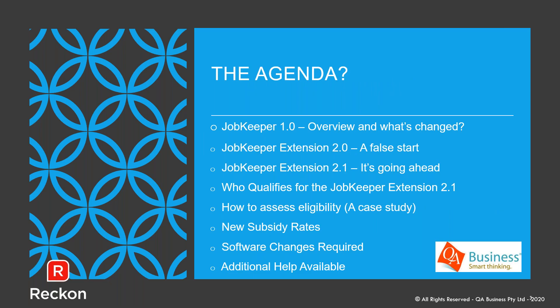So JobKeeper 1.0 — what's changed? We'll do an overview even though it's just about finished, but a lot of what's relevant in 1.0 flows through to the extension. There was also an announcement called JobKeeper 2.0 — a bit of a false start — but the lion's share of the session is about the extension, JobKeeper 2.1. It is going ahead and it's about to start. We'll cover who qualifies, how to assess eligibility, the new subsidy rates, software changes, and where to get more help.